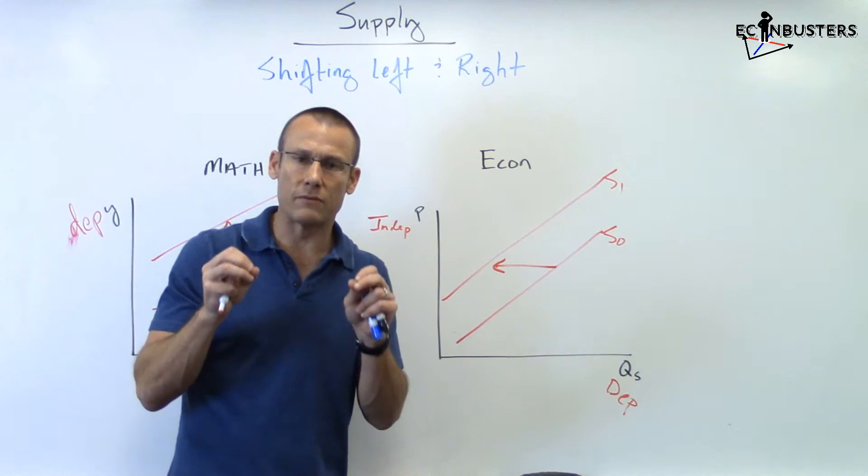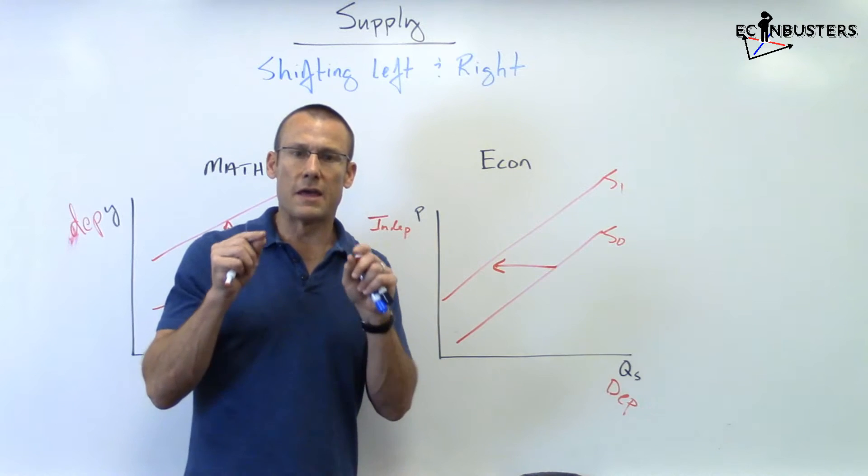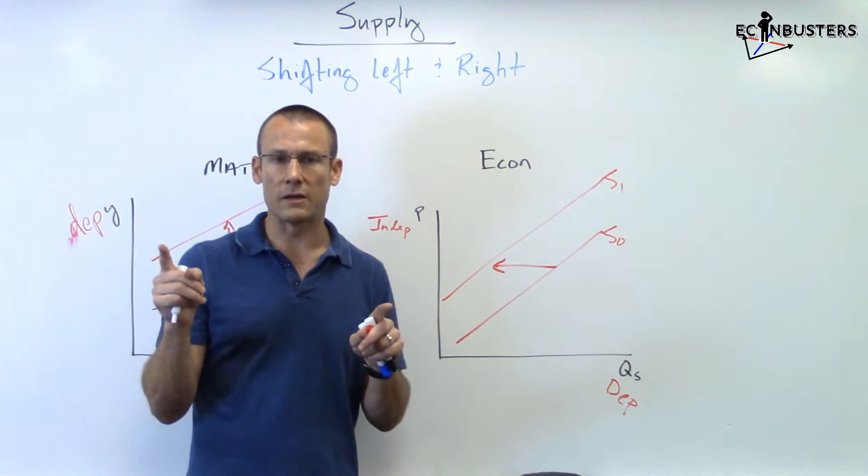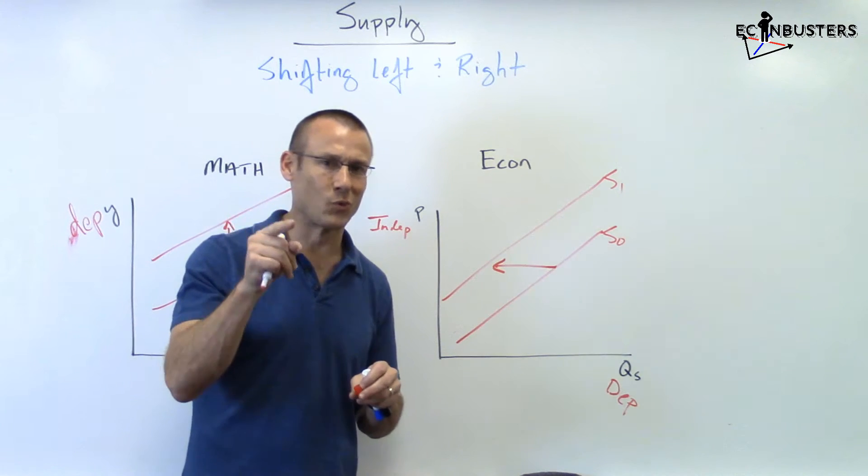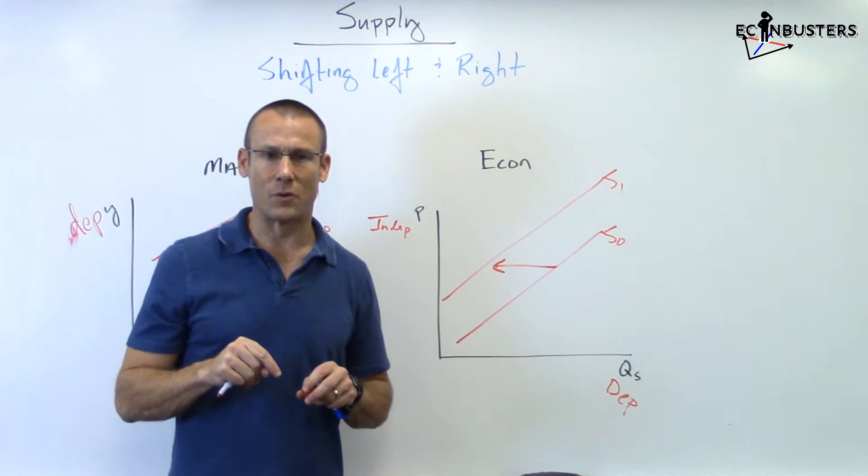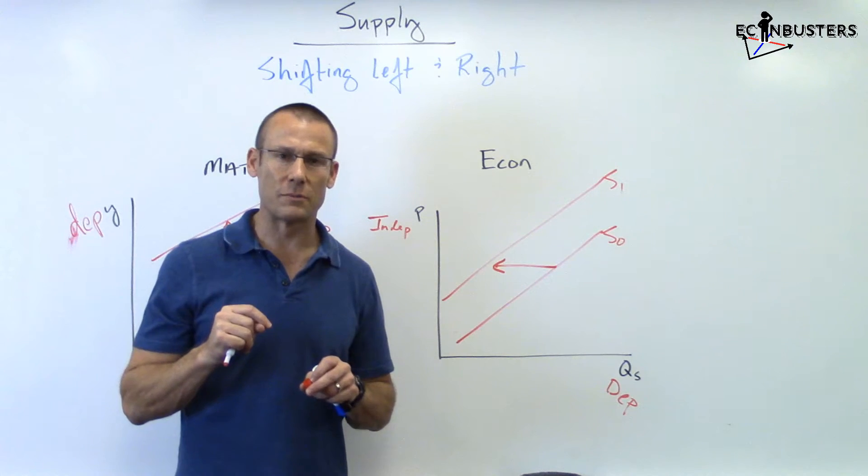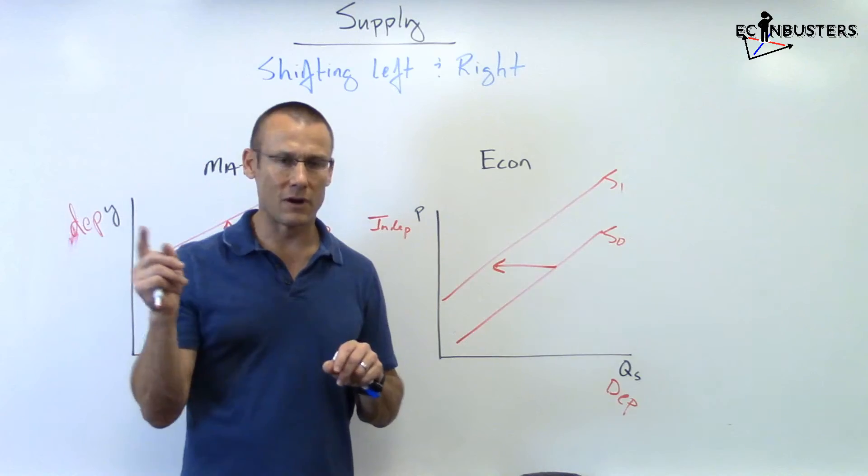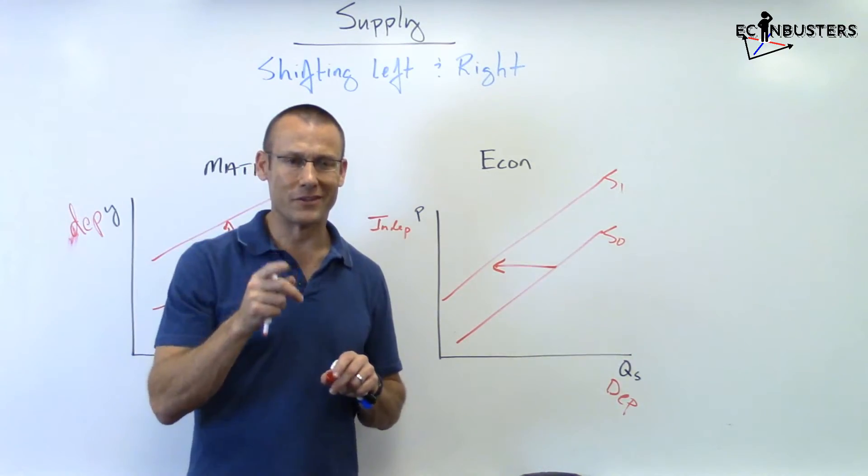And that's why in economics supply and demand shift left and right - because the economist has switched where the independent and dependent variable go. Hopefully that made some sense to you and hopefully that gives you a little deeper understanding of why when you talk about supply and demand, think left and right, don't think up and down. See you in the next video.